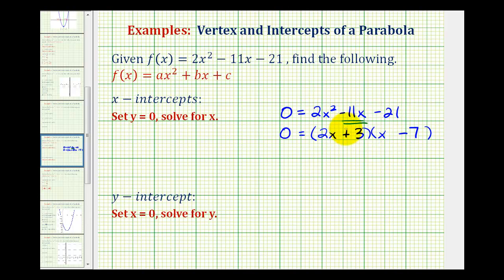So this product is equal to zero when 2x plus 3 equals zero, or when x minus 7 equals zero. So here we would subtract 3 and divide by 2, so one solution is x equals negative 3 halves, and here we have x equals positive 7. So our two x-intercepts listed as ordered pairs would be negative 3 halves, comma 0, and 7, comma 0.